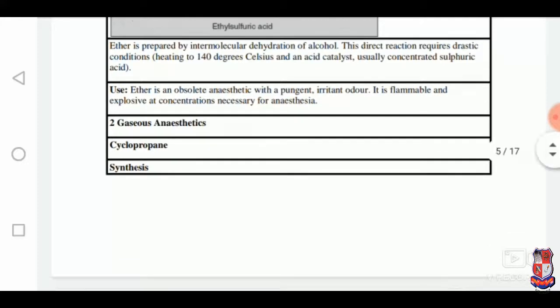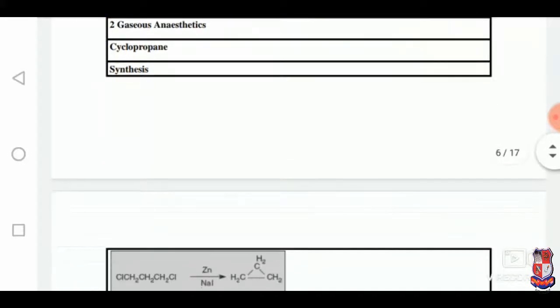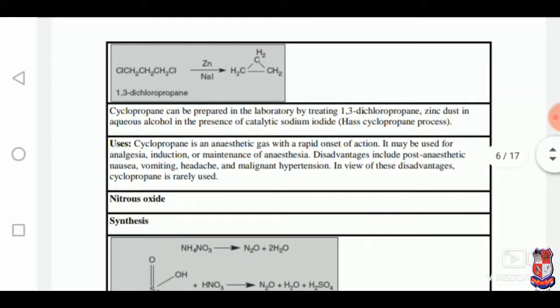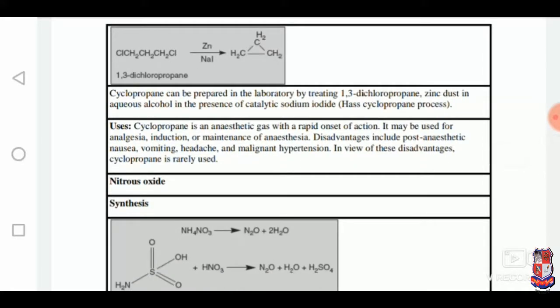Cyclopropane: it is synthesized from 1,3-dichloropropane. It is used as an anaesthetic gas with rapid onset of action, but its demerit includes post-anaesthetic nausea, vomiting and headache as severe side effects.